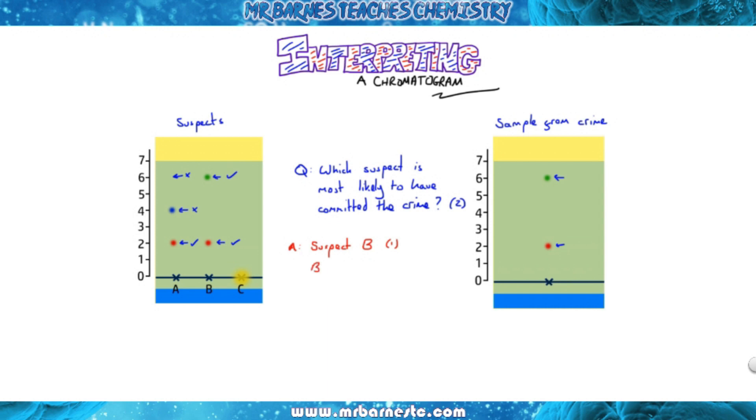The next thing you have to do which is where people lose marks is you have to explain it. You have to tell me why and that is saying something along the lines of both inks are at the same height or you can say they both have the same colours.